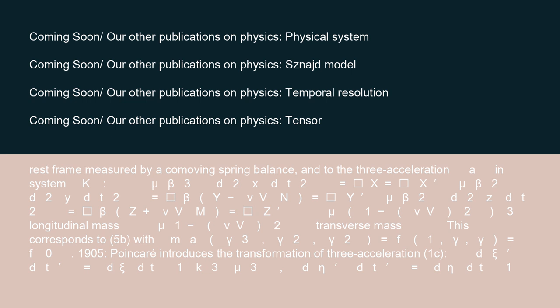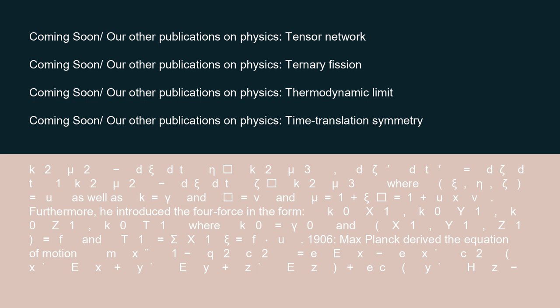1905: Poincaré introduced the transformation of three-acceleration: d_psi/dt equals d_psi′/dt′·(1/k³·mu³), d_eta/dt equals d_eta′/dt′·(1/k²·mu²) − d_psi′/dt′·eta·epsilon/(k²·mu³), d_zeta/dt equals d_zeta′/dt′·(1/k²·mu²) − d_psi′/dt′·zeta·epsilon/(k²·mu³), where (psi, eta, zeta) equals u, k equals gamma, epsilon equals v, and mu equals 1 + psi·epsilon equals 1 + u_x·v. Furthermore, he introduced the four-force in the form (k₀·x1, k₀·y1, k₀·z1, k₀·t1), where k₀ equals gamma₀ and (x1, y1, z1) equals f and t1 equals sigma·x1·psi equals f·u.